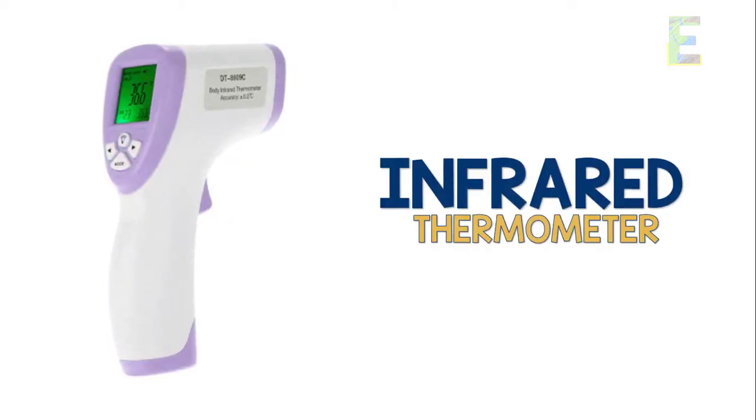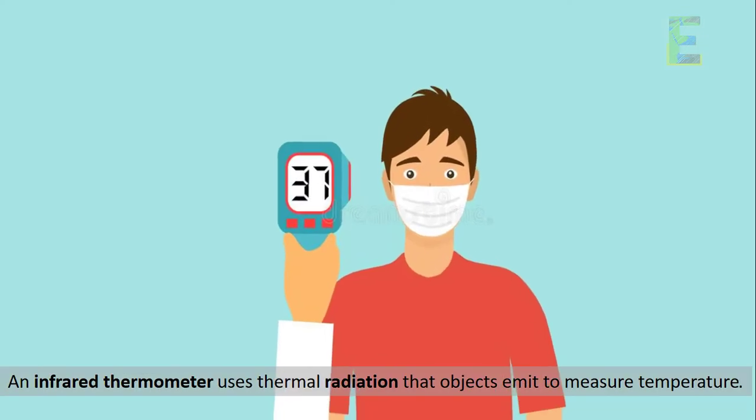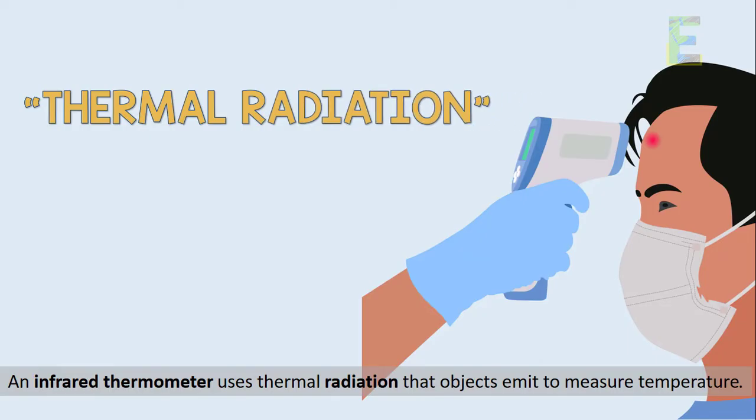And the last kind of thermometer is the infrared thermometer. An infrared thermometer uses thermal radiation that objects emit to measure temperature.